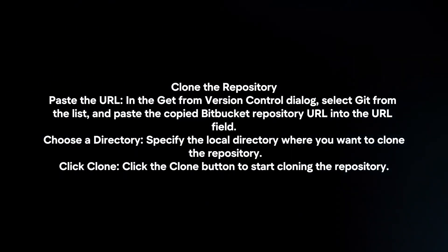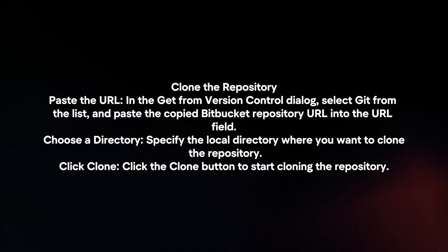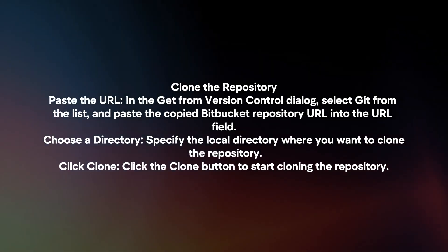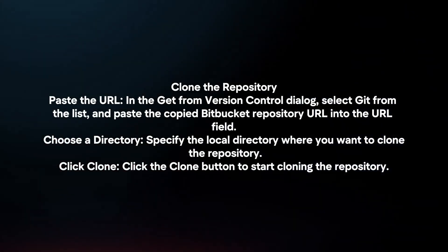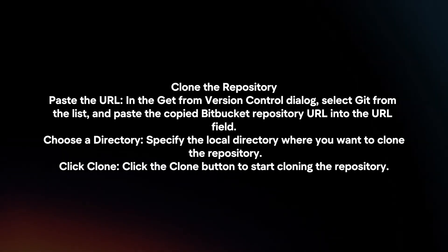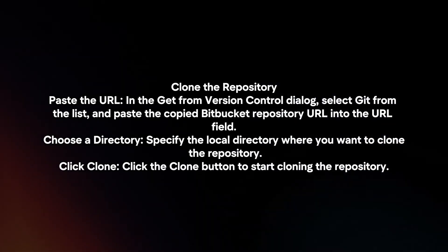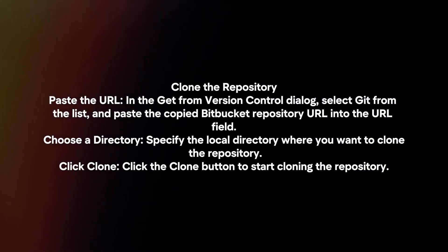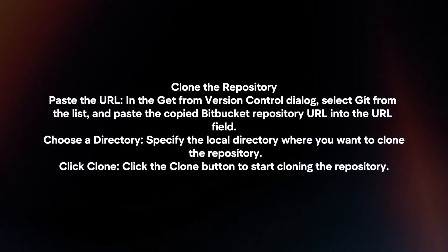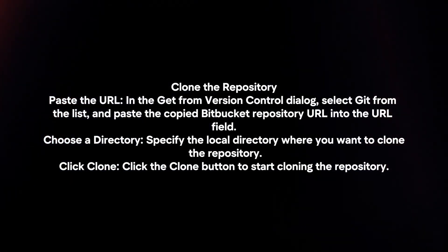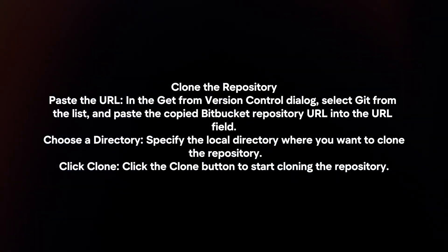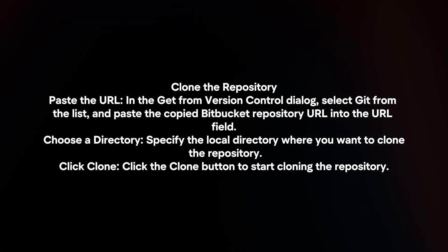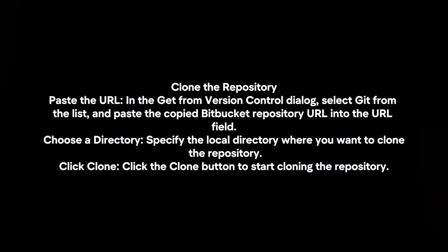To clone the repository, paste the URL: in the 'Get from Version Control' dialog, select Git from the list and paste the copied Bitbucket repository URL into the URL field. Specify the local directory where you want to clone the repository, then click the Clone button to start cloning.